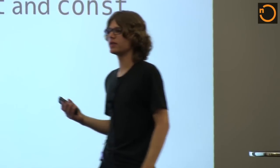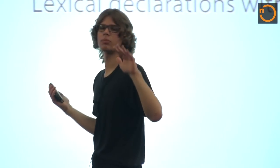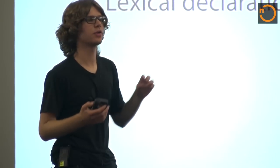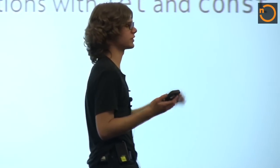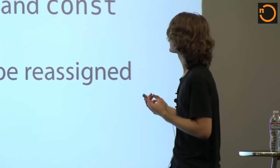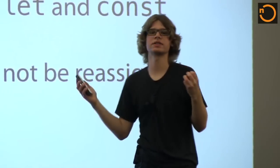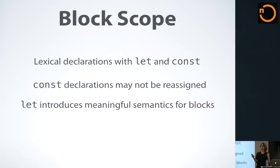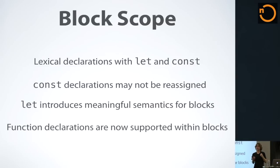Another feature is block scope. This is one that I think a lot of us have heard about and been excited about. It's one of the more confusing points for people who are first coming into the language. The fact that var is actually scoped to a particular function or the global scope rather than scoped to within a block. Block scope with let and const gives us real block scoping semantics and gives us real constants. They cannot be reassigned once they've been declared. Let also introduces meaningful semantics for blocks. Function declarations are also now supported within blocks.